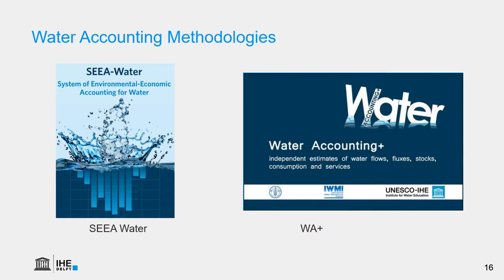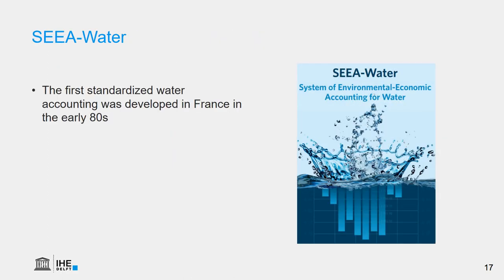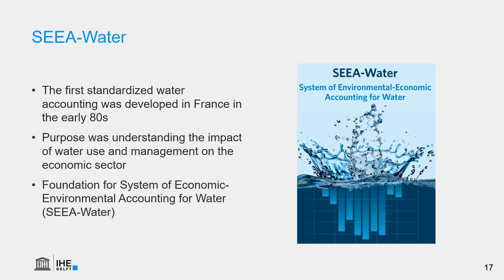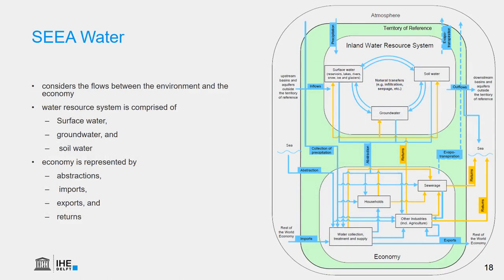There are various water accounting methodologies in use. However, we are going to discuss here only two of the methodologies: the System of Environmental Economic Accounting for Water, or SEEA-Water, and Water Accounting Plus. The first example of standardized water accounting was developed in France in the early 1980s. Its purpose was understanding the impact of water use and management on the economic sector. This concept was the foundation for the development of the System of Environmental Economic Accounting for Water, SEEA-Water.